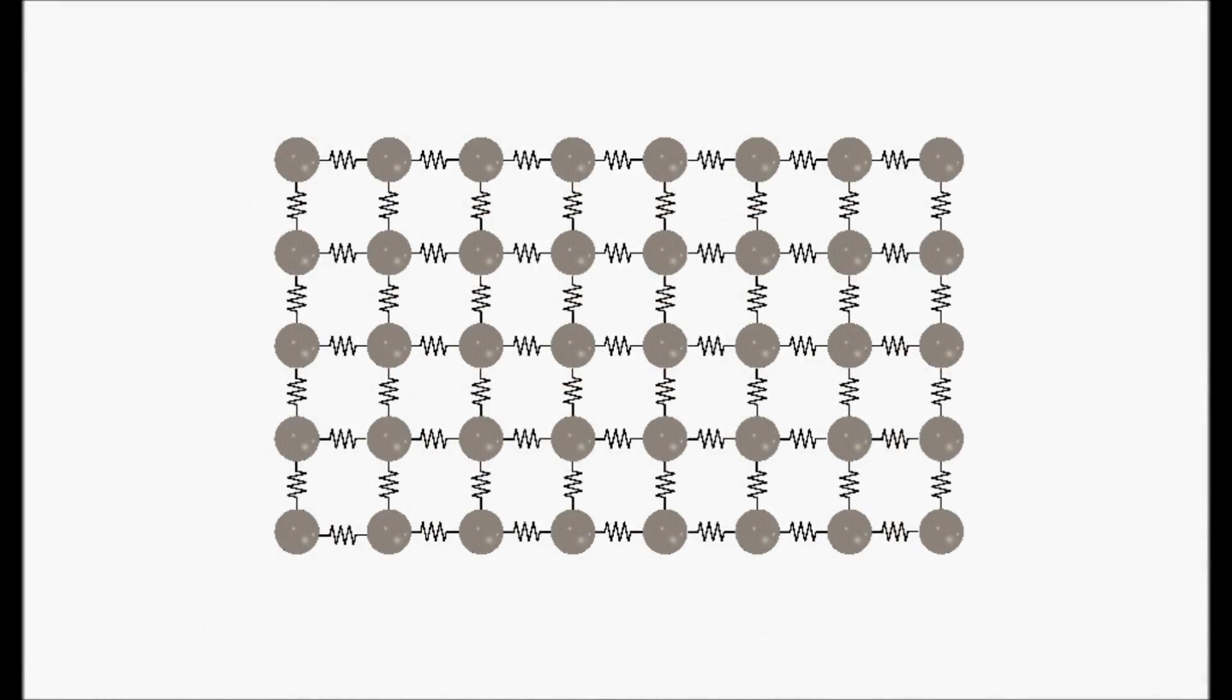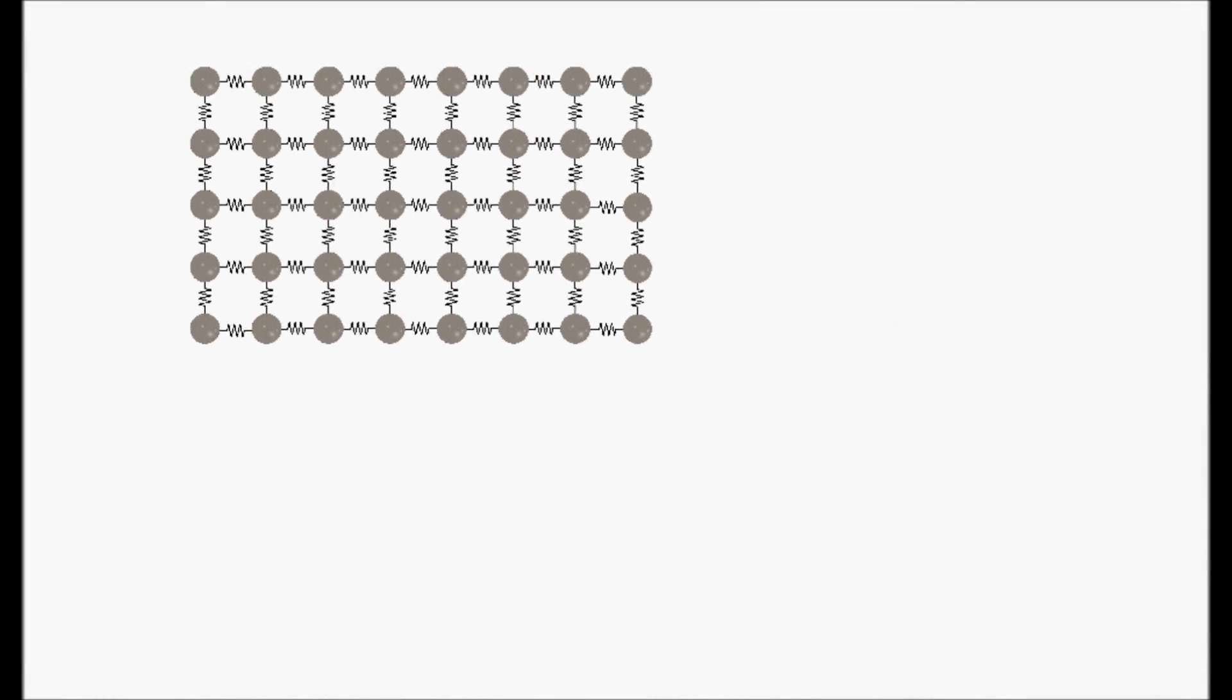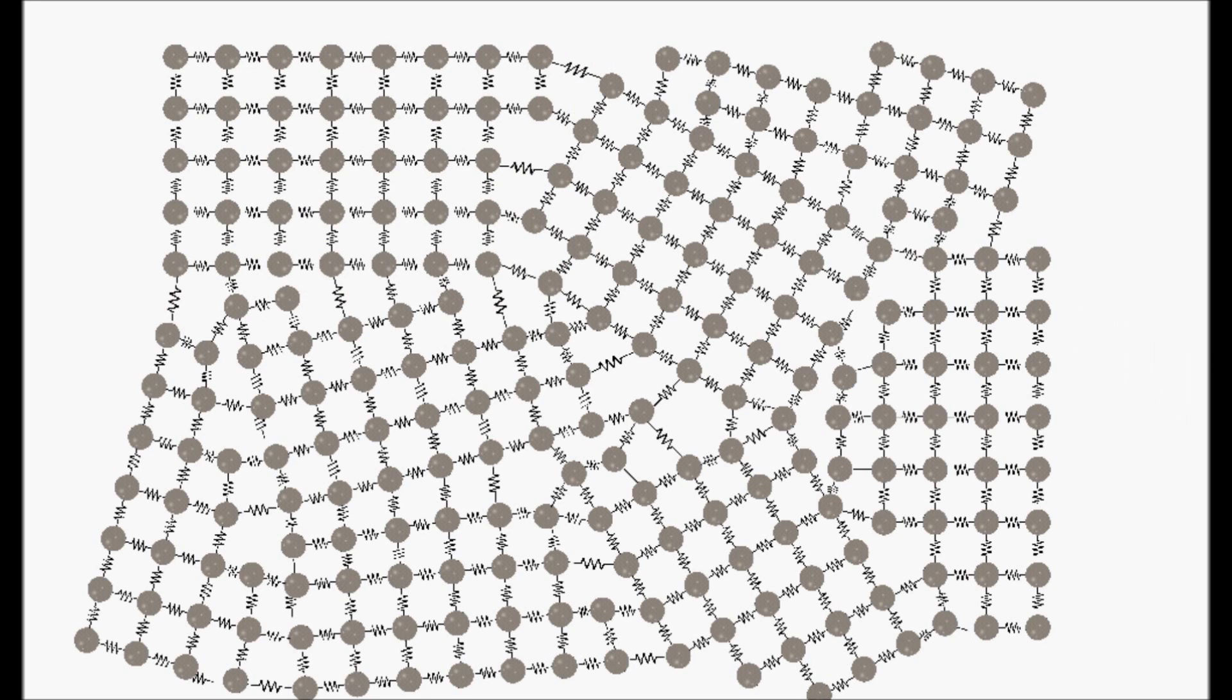It is rare for real-life materials to be single-crystals. Usually they are composed of millions of them, to which we call grains. Their size can be from millimeter to nanometers.